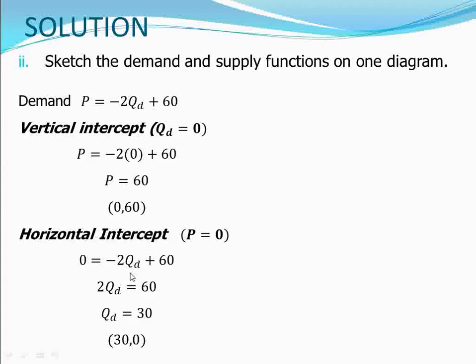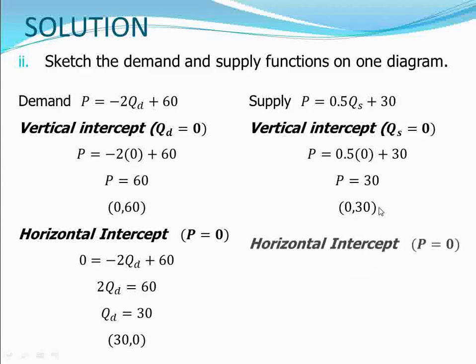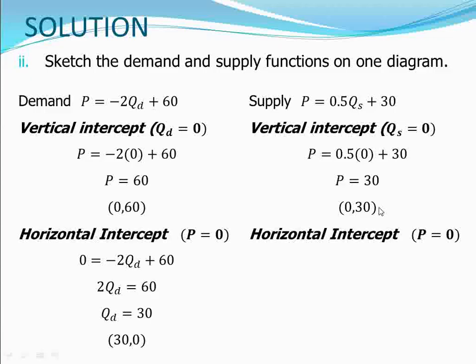Now for the supply function P = 0.5QS + 30, we find the vertical intercept by setting QS = 0. This gives P = 0.5(0) + 30 = 30, so the vertical intercept is (0, 30), meaning the supply curve cuts the price axis at 30.